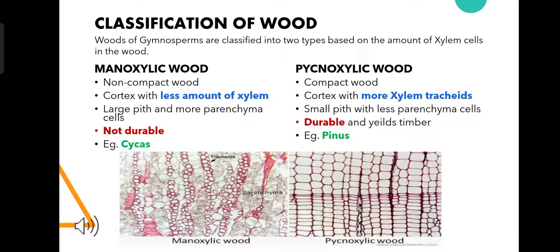Classification of wood. The woods of gymnosperms are mainly classified into two major types based on the amount of xylem cells present in their cortex. They are manoxylic wood and pycnoxylic wood. Manoxylic wood is a non-compact wood with a lesser amount of xylem tracheids in the cortex. It has a large pith with more parenchymatous cells, and hence it is not durable and cannot be used economically. Example: Cycas.